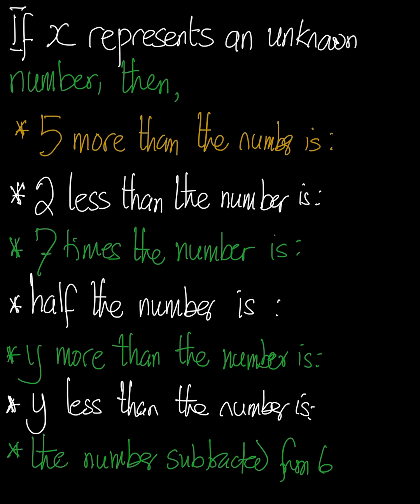Now, the first statement says that if X represents an unknown number, we are imagining that it's an unknown number, then 5 more than that number is 5 plus X. Because 5 more than the number means we need to add 5 more to that number. So that's why it's always going to be 5 plus X.